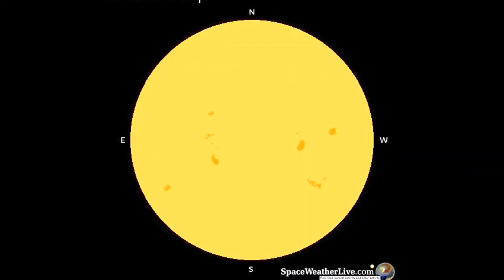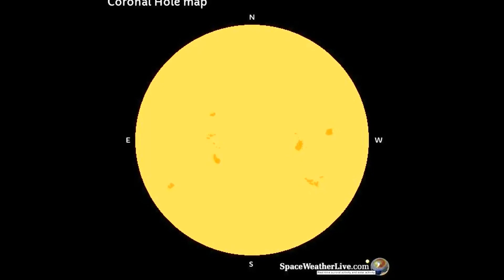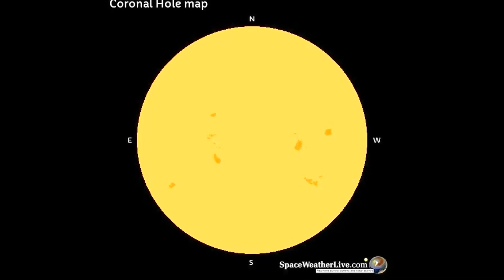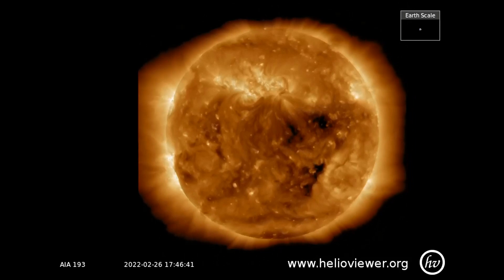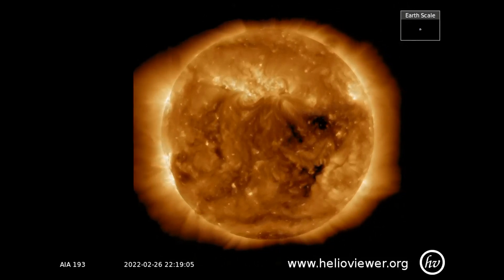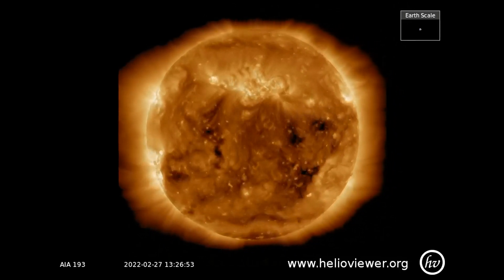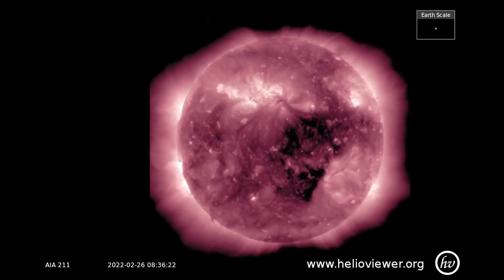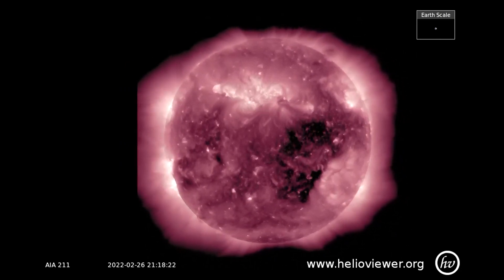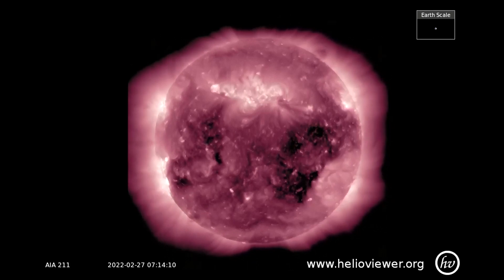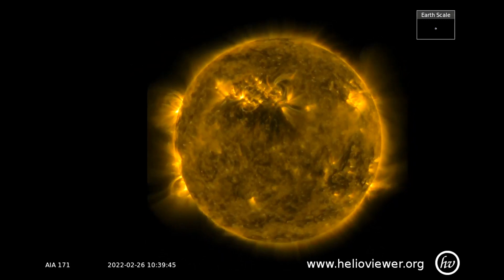This coronal hole map shows a sprinkling of coronal holes covering the Earth-facing side of the Sun today. Here is a look at the coronal holes seen through different filters: SDO 193 filter, SDO 211 filter, and SDO 171 filter.